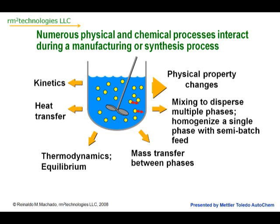We need mixing to create dispersion of these multiple phases, or perhaps to homogenize a single phase with a semi-batch feed. There also can be physical changes. All these various things are going on simultaneously in a stirred tank reactor. For effective scale-up, we need to understand how they interact.